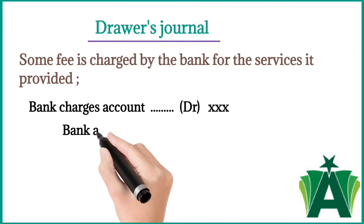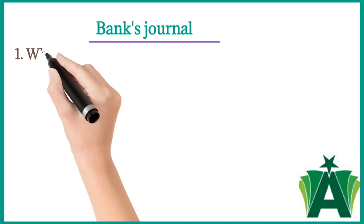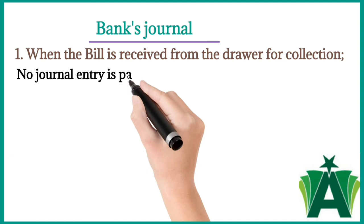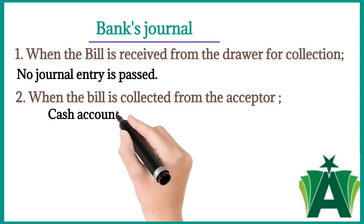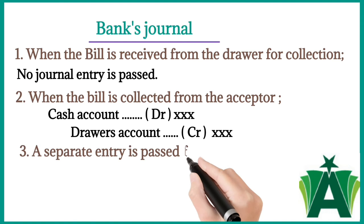Bank's journal: (1) When the bill is received from the drawer for collection — no journal entry is passed. (2) When the bill is collected from the acceptor — Cash Account debit, Drawer's Account credit. (3) A separate entry is passed for collection charges — Drawer's Account debit, Collection Charges Account credit.